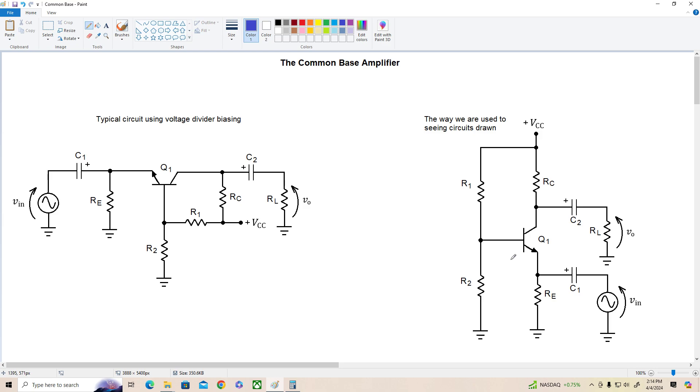So let's start by considering that the voltage divider R1 and R2 establishes a voltage here, VB, that turns on the base emitter junction and biases the transistor up into the active region.